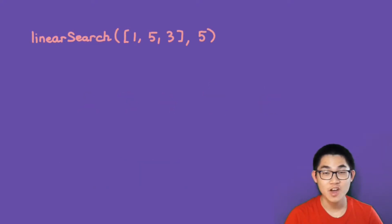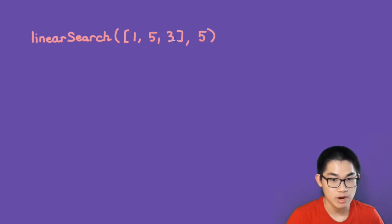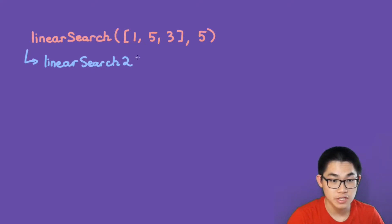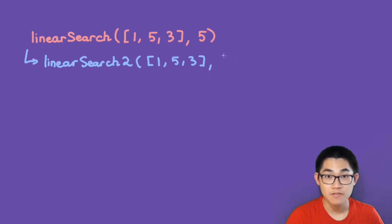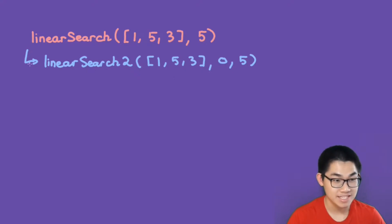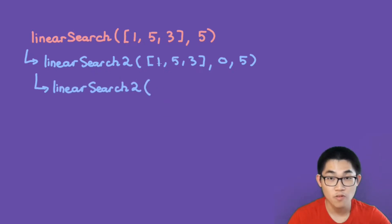Let's talk about the recursive linear search. We have this linear search here and we want to find number five in this array. The first thing it does is call linear search number two, which is a different function, and passes in the same list. We need to keep track of the index — the first index is zero. We have our target which is number five. This is where the recursion occurs.